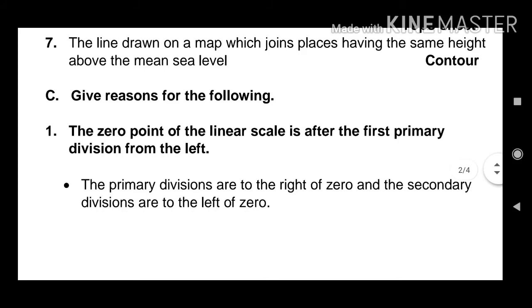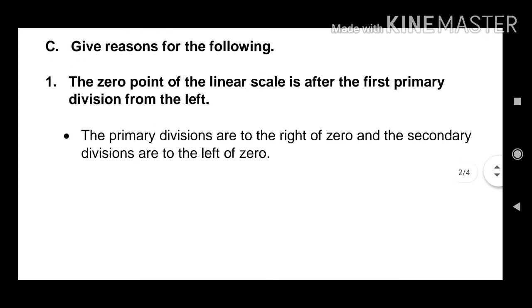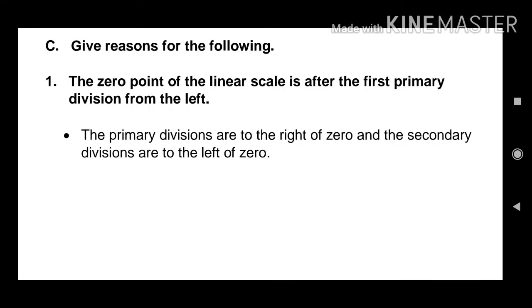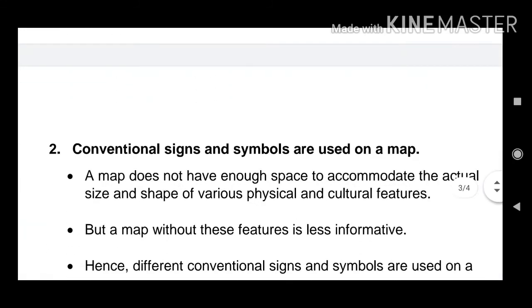Next one, give reasons for the following. First question. The zero point of the linear scale is after the first primary division from the left. The primary divisions are to the right of zero and the secondary divisions are to the left of zero.